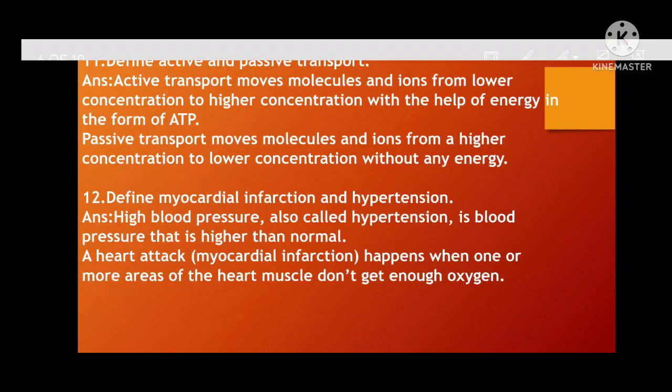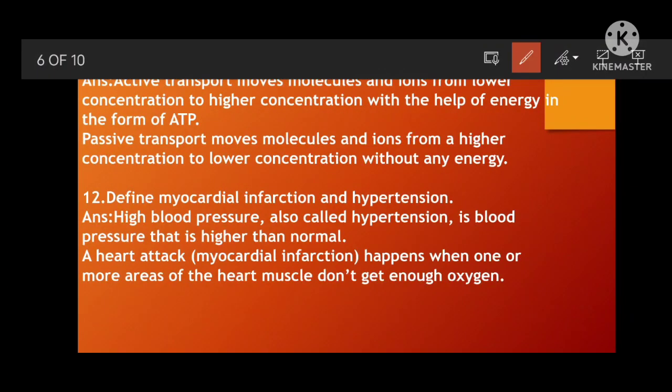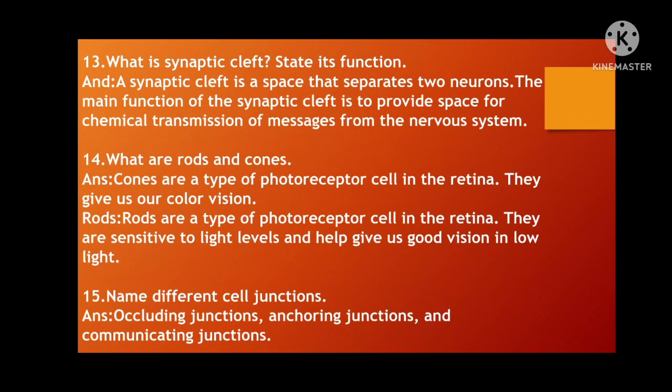Next: Define myocardial infarction and hypertension. Hypertension, also known as high blood pressure, is blood pressure higher than normal. Normal BP is 120/80 — systolic/diastolic pressure. If it exceeds that, it leads to high blood pressure. Myocardial infarction, or a heart attack, happens when one or more areas of the heart muscle do not get enough oxygen. If areas like the left or right atrium do not receive enough oxygenated blood, the heart gets arrested — a heart attack.